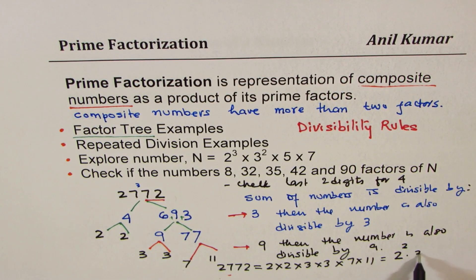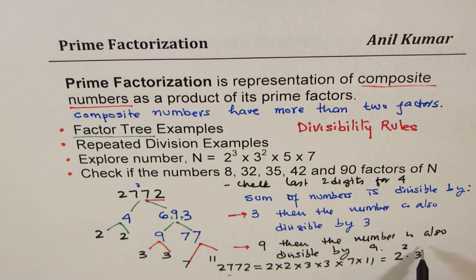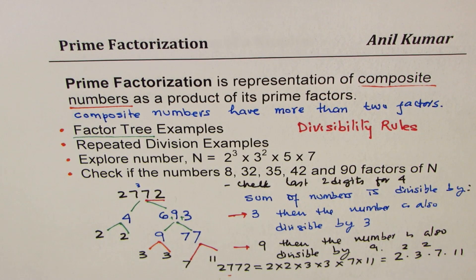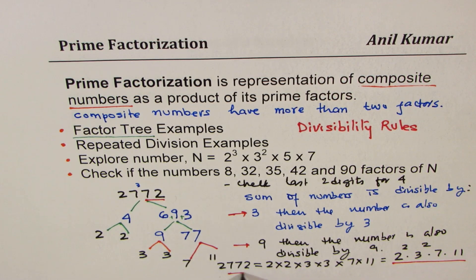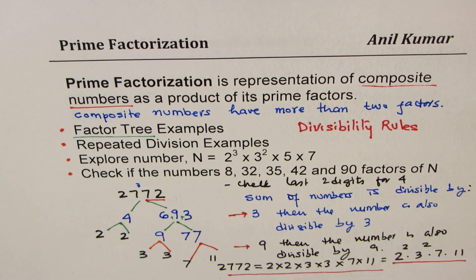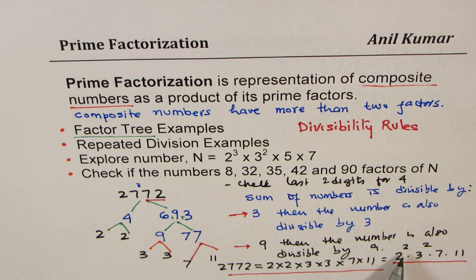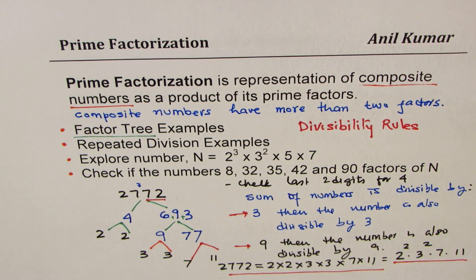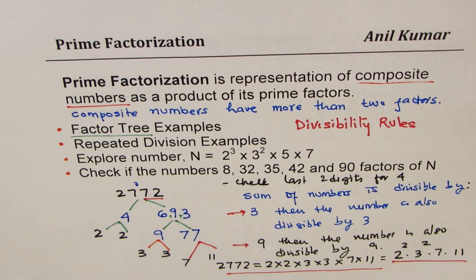The dot represents multiplication. Writing in short form: 3 squared and then 7 times 11. So that is another way of writing it. We can replace multiplication with dot signs and write it in a shorter form. If there are more than two identical numbers multiplying, we can write them as a square or cube, as the case may be.